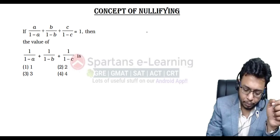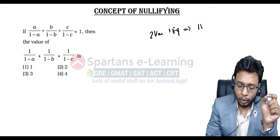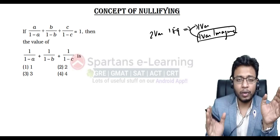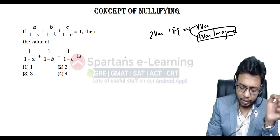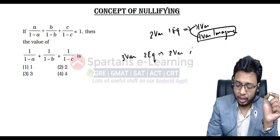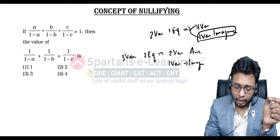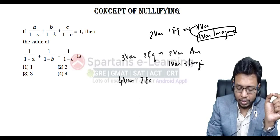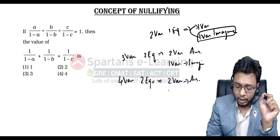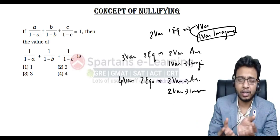If there are two variables and one equation given, you can only solve one variable, and the other variable you have to imagine something — based on this imagination, we get the value of that one variable. Similarly, if you have three variables and two equations, two variables will have a specific answer, but for one variable you have to imagine — you can keep any value you want. If you have four variables and only two equations, only two variables will have a specific answer, and the other two variables are placeholders for imagination — you can put any value you wish.